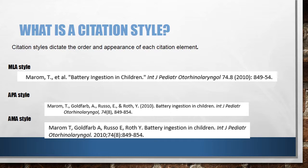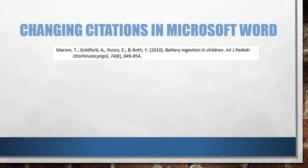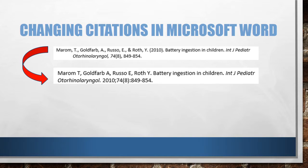Here you see the citation for the same journal article in several citation styles — the styles called MLA, APA, and AMA. Citation management software also interacts with Microsoft Word documents. It can instantly rearrange the elements of citations into hundreds of citation styles.